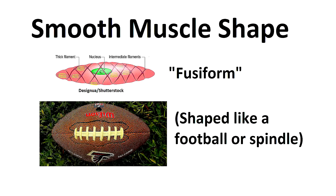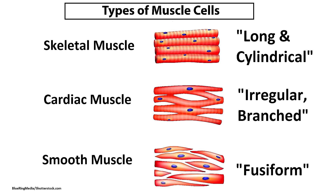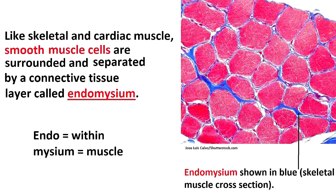As we look at the shape of smooth muscle, you'll notice it has a shape referred to as fusiform, which resembles a football or spindle shape. This is different from cardiac muscle tissue, which develops into that irregular branched pattern, or skeletal muscle tissue, which consists of fibers that are long and cylindrical. However, like skeletal and cardiac muscle, smooth muscle is also surrounded and separated by a connective tissue called endomysium.